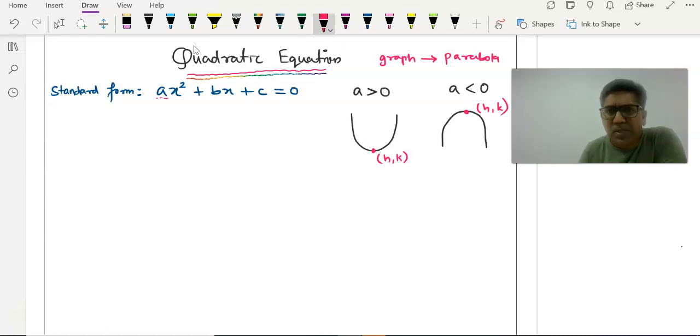If your graph opens up, this is the minimum it can go. There is no point below this. So we say when the graph opens up, it has a minimum value and the minimum value is the y coordinate of the vertex which is k.